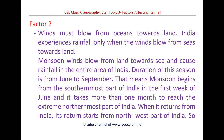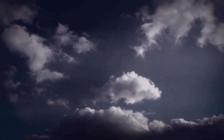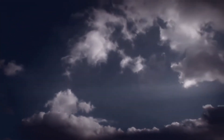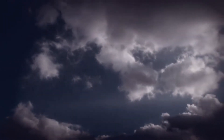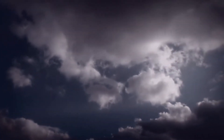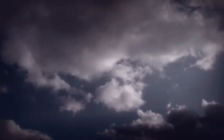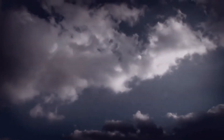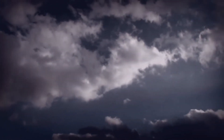The second factor that influences rainfall is the direction of winds. Winds must blow from oceans towards land. India experiences rainfall only when the winds blow from seas towards land. Monsoon winds blow from land towards sea and cause rainfall in the entire area of India. The duration of this season is from June to September. Monsoon begins from the southernmost part of India in the first week of June and takes more than one month to reach the extreme northernmost part. When it returns from India, its return starts from the northwest part.